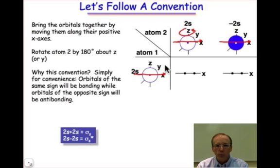And you might ask, why do we do this? Why do we adopt this convention? The answer is really for convenience. What we will find is that when we bring the positive x-axis together, the orbitals that have the same sign will produce bonding interactions, and orbitals that have opposite signs will produce anti-bonding orbital interactions.